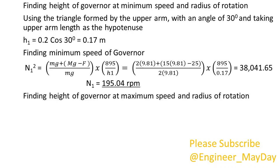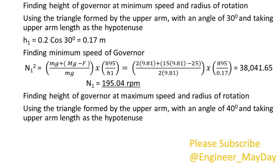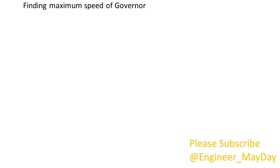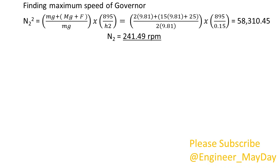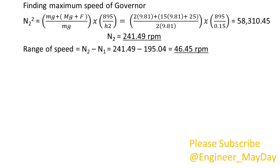Finding height of governor at maximum speed and radius of rotation: using the triangle formed by the upper arm with an angle of 40 degrees and taking upper arm length as the hypotenuse, H2 equals 0.15 meters. Finding maximum speed of governor: N2 equals 241.49 RPM. Notice for minimum speed, friction F is negative and for maximum speed, friction F is positive. Range of speed equals 46.45 RPM.